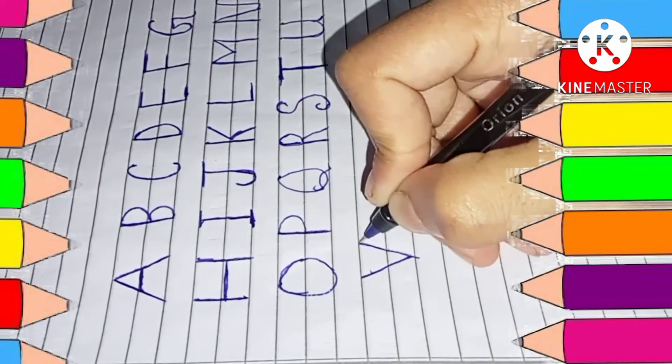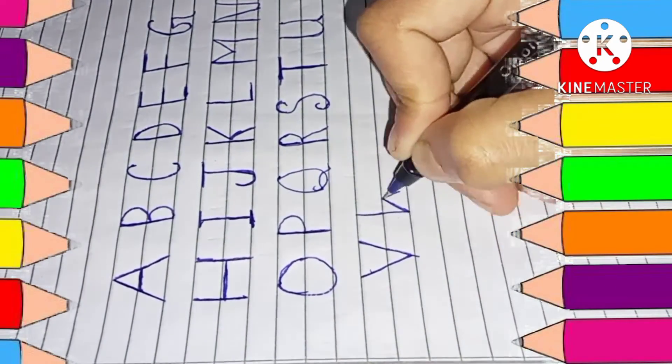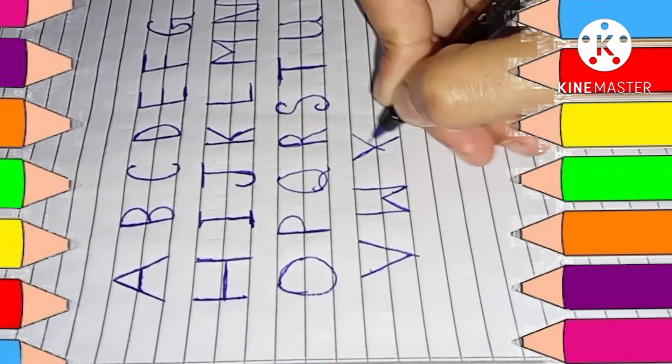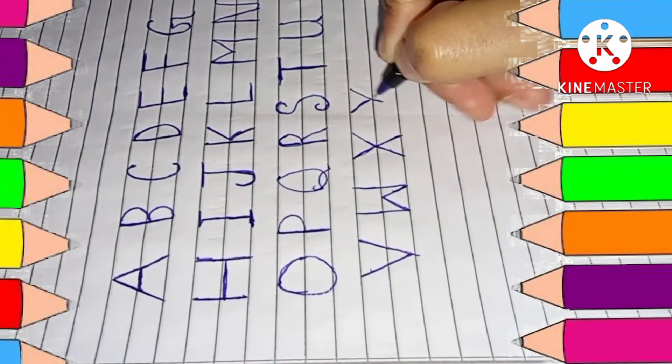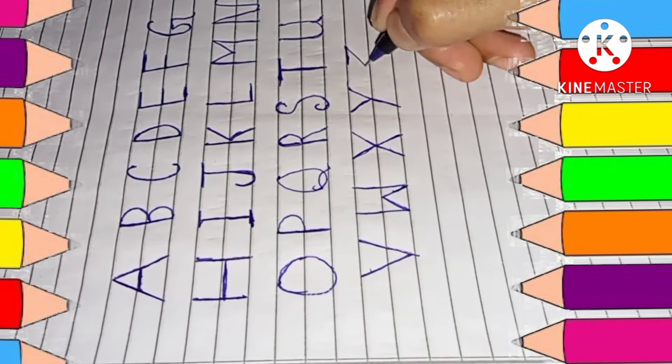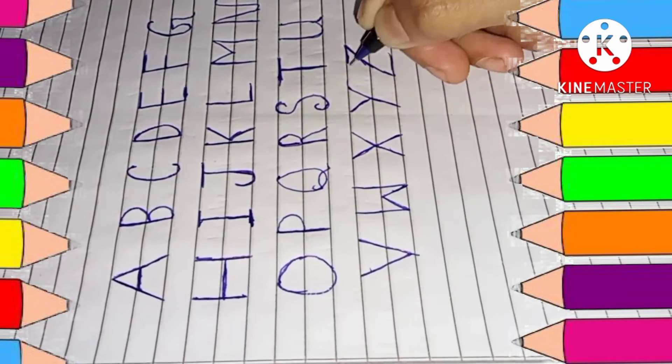V for vine, W for watch, X for X-mas tree, Y for young, Z for zebra.